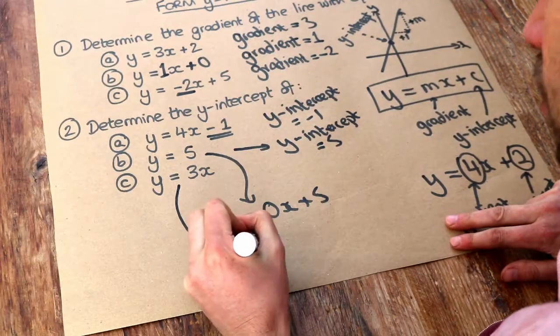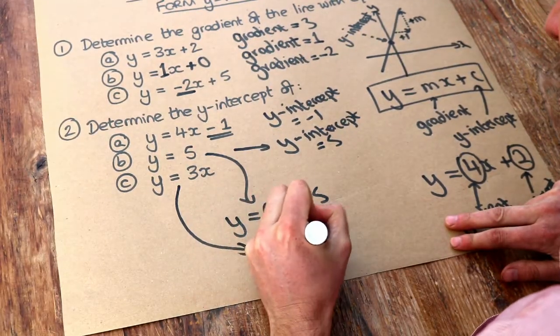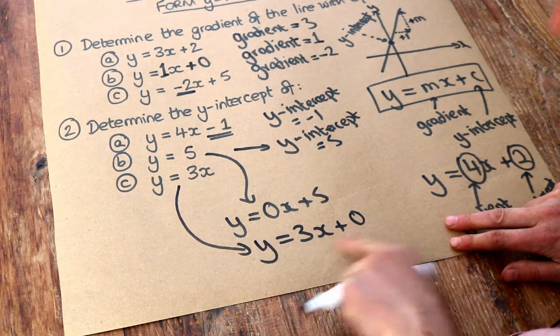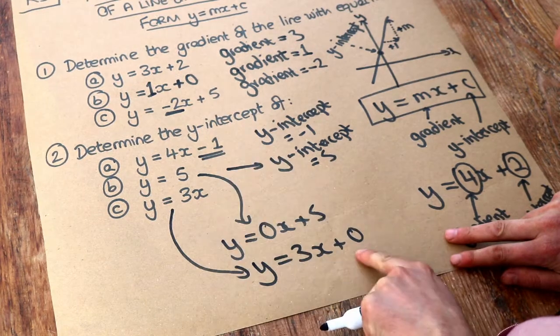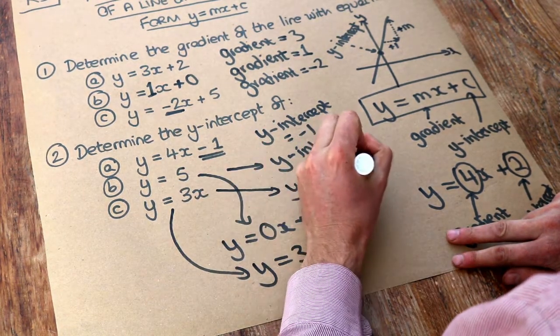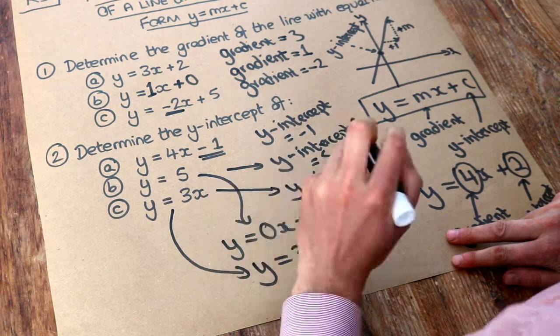But we could write it as y equals 3x plus 0. Because plus 0 doesn't have any effect. That would just be y equals 3x. So in this case, the y-intercept would be 0. So the y-intercept there would be 0. Because we're not adding any number on the end of that 3x.